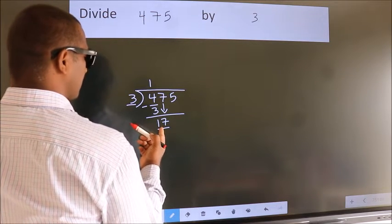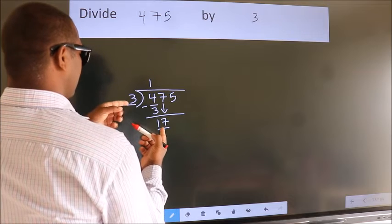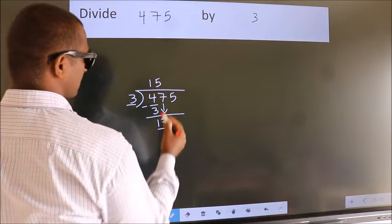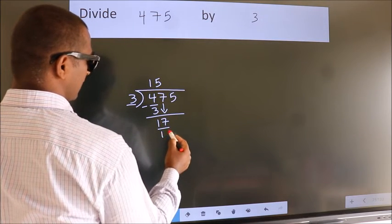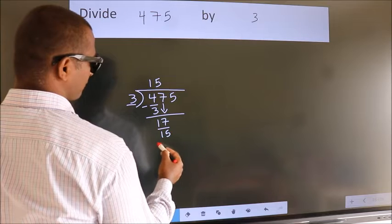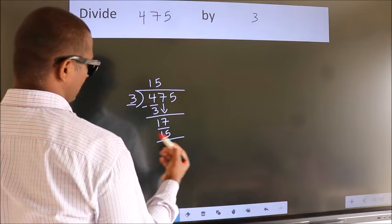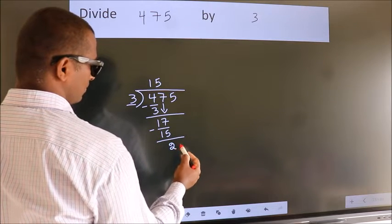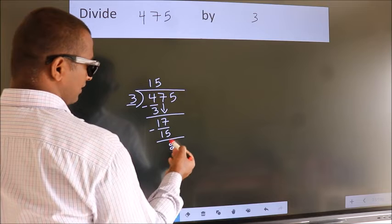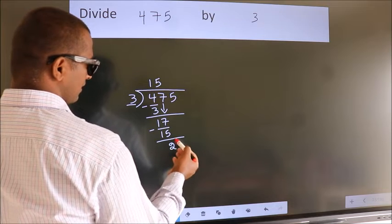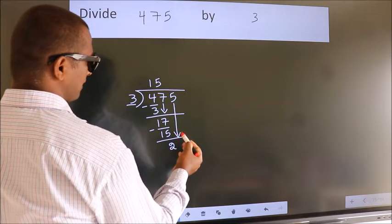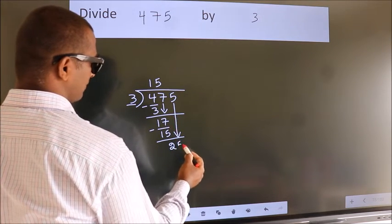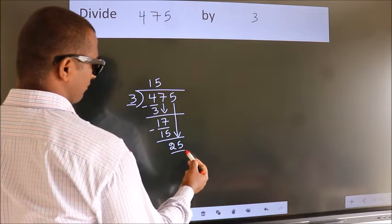A number close to 17 in the 3 times table is 3 fives 15. Now we subtract. We get 2. After this, bring down the beside number. So, 5 down. So, 25.